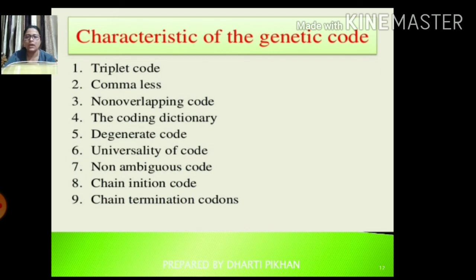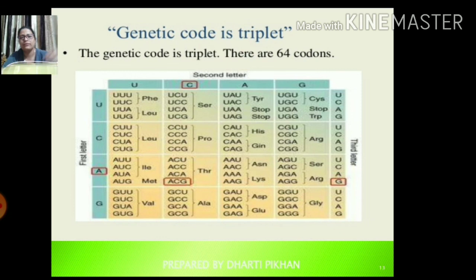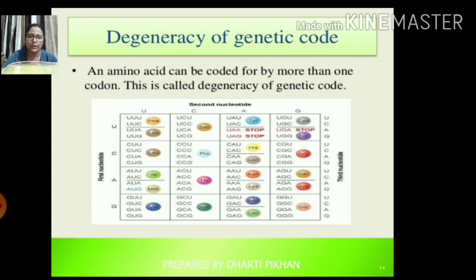Additional characteristics include chain initiation codon and chain termination codon. The degeneracy of the genetic code means that an amino acid can be coded for by more than one codon, and this is called the degeneracy of the genetic code.